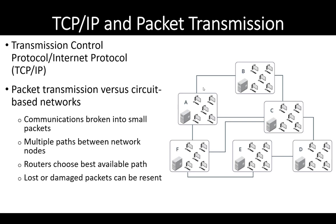There are two different ways we can get information from one place to another: packet transmission and circuit-based networks. A circuit-based network is like the old telephone service where you pick up your phone, dial a number, and it rings a specific other phone. When those two phones connect, there is a dedicated wire between the two — that's called a circuit-based network. A packet-based network, which is what we usually see on the internet, takes the data and breaks it into smaller packets, and each packet could have a separate route to the destination.